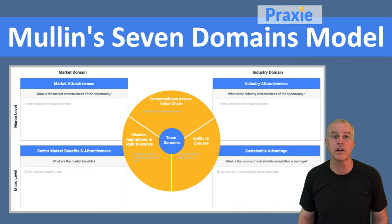And then your ability to execute, your operational capabilities so that you can go to market, be agile, be fast. So the team domains include mission, value chain, and execution.